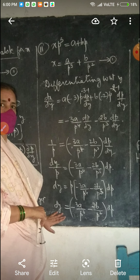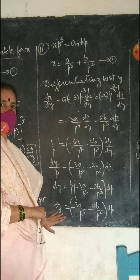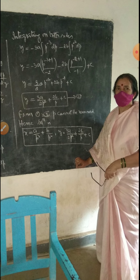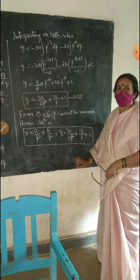That is: -3A/P⁴·(dP/dY) - 2B/P³·(dP/dY). Since dX/dY = 1/P, we have 1/P = (-3A/P⁴ - 2B/P³)·(dP/dY). Rearranging: dY = P·(-3A/P⁴ - 2B/P³)·dP = (-3A/P³ - 2B/P²)·dP. Integrating both sides: Y = -3A·∫P⁻³dP - 2B·∫P⁻²dP.